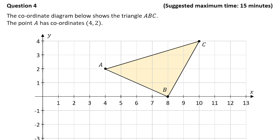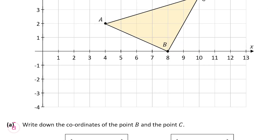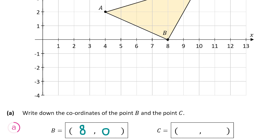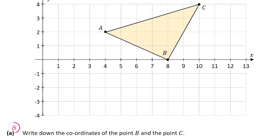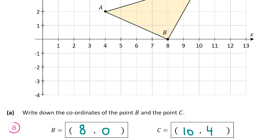Question 4 shows us a coordinate diagram with the triangle ABC, with the point A having the coordinates (4, 2), and it also shows us the points B and C. Part A asks us to write down the coordinates of point B and point C. The x value of B is 8 and the y value is 0, so B is (8, 0). For point C the x value is 10 and the y value is 4, so C is (10, 4). That's the answer for part A.